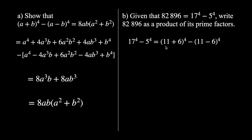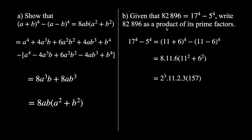With a = 11 and b = 6, we apply the identity: 8 · 11 · 6 · (11² + 6²). Now 11² + 6² = 121 + 36 = 157, and you need to verify that 157 is prime. Writing 8 as 2³ and 6 as 2 × 3, we get 2³ × 11 × 2 × 3 × 157, which simplifies to 2^4 × 3 × 11 × 157. So 82,896 = 2^4 × 3 × 11 × 157.